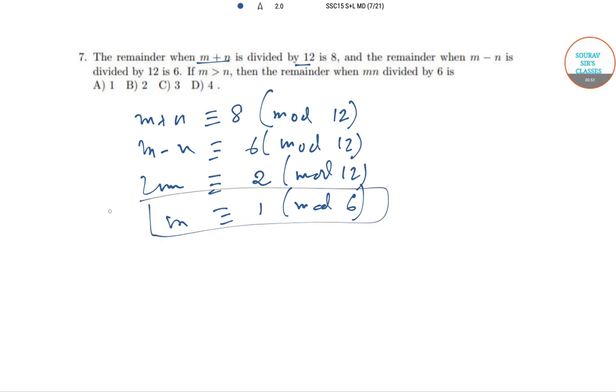Similarly, by subtracting, we get 2n ≡ 2 (mod 12), so you can solve it yourself and find n ≡ 1 (mod 6).